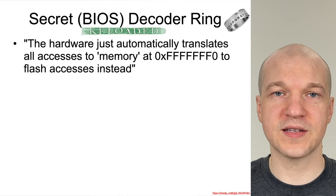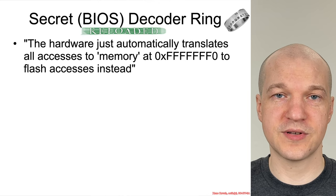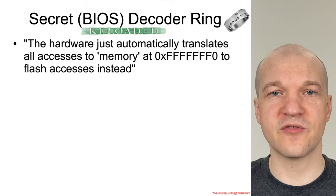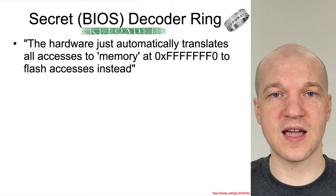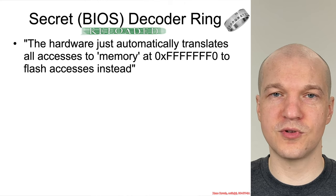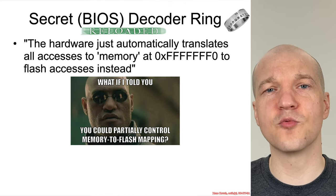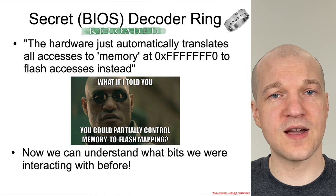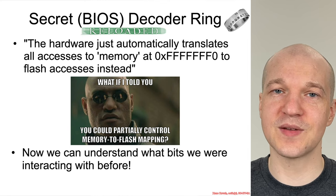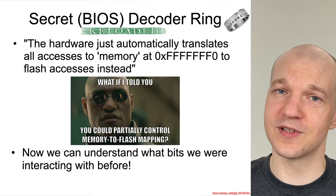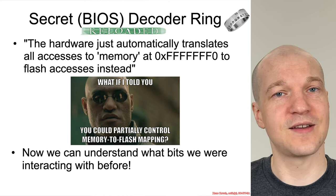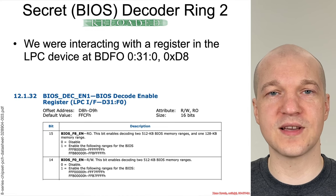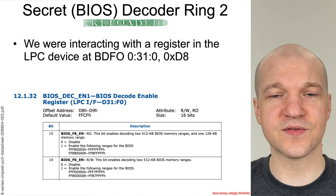I want to make a quick callback to our optional secret BIOS decoder ring lab from before, where we talked about how physical addresses in the high 4 gigabyte range were controlled by some particular bits and we could actually map and control some of those things. Now we are at the point where you can actually understand it better — I said you'd understand it better later in the class, and now you can. So what specifically are the new bits we can understand about these slides from before?